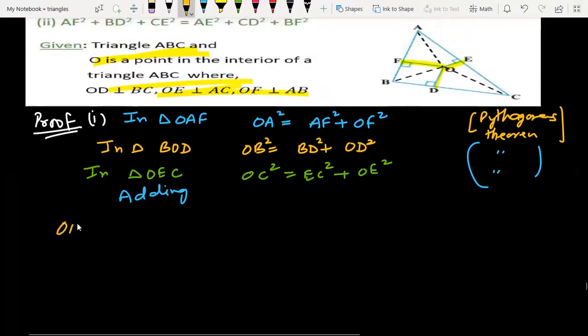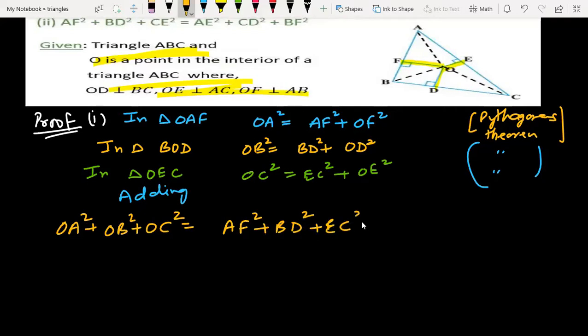OA square plus OB square plus OC square equal to AF square, BD square, EC square, OF square, OD square, OE square.